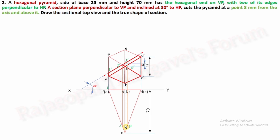For the fourth cutting point 4', this is where the section plane cuts the d'e' side of the hexagon. Extend a vertical projector — d and e are located here — and mark the meeting point as 4 in the top view. Now join all section plane cutting points 1, 2, 3, 4 in the top view.